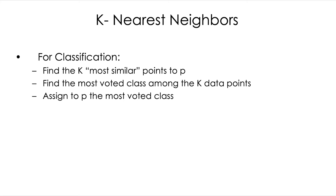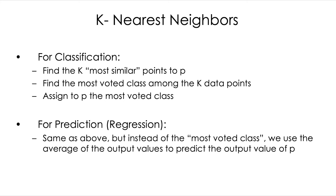So what is k-nearest neighbors? For classification, instead of using one neighbor, we use the k most similar points to a given point p. Among the k neighbors, we find the most voted class and classify our new data point p according to that most voted class. For regression, we find the k nearest neighbors, average the output among all those neighbors, and predict the output of p as that average.